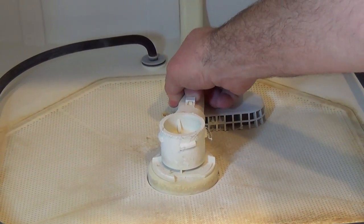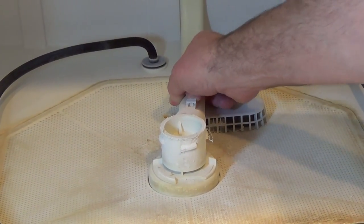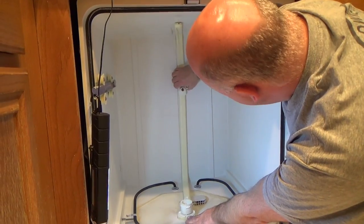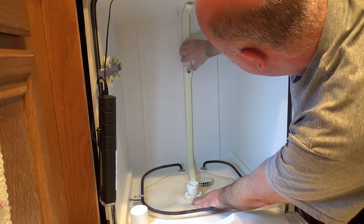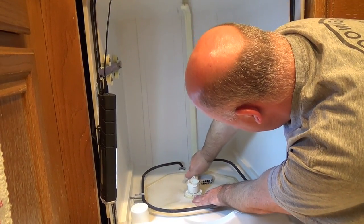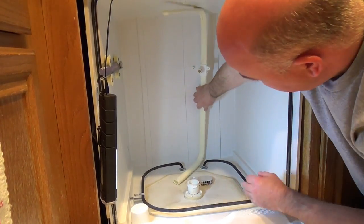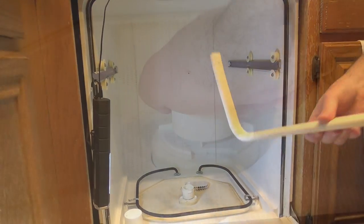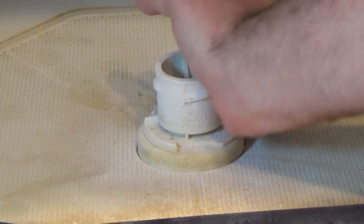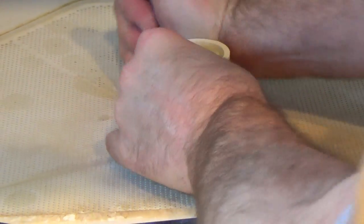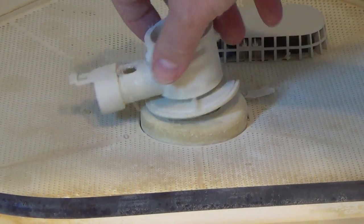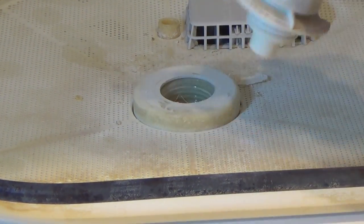Next, we're going to unclip this rear hose here. Just gently lift up. Be careful not to break the tab. Then you can gently pull the hose out and set it aside too.